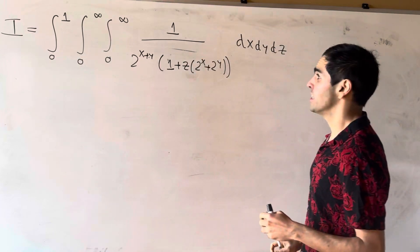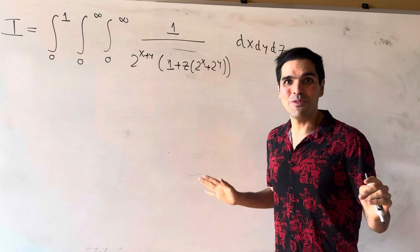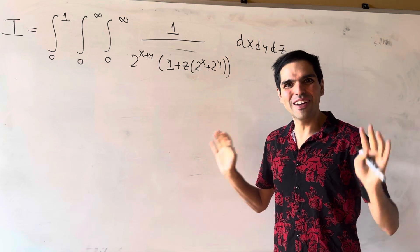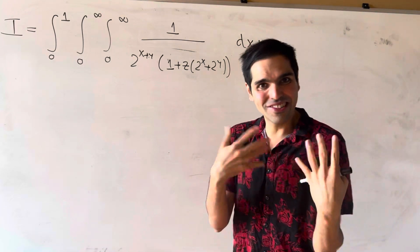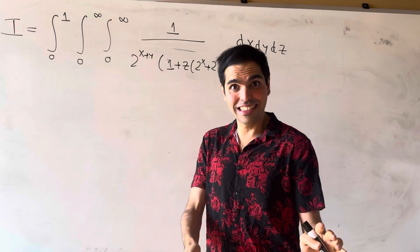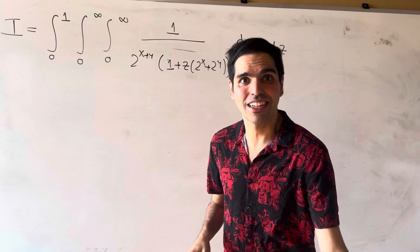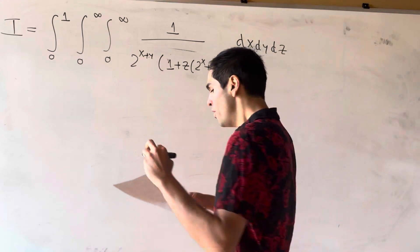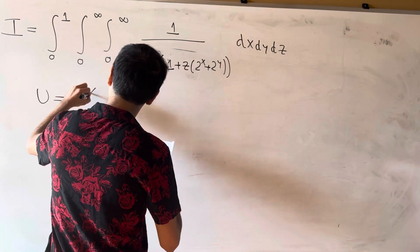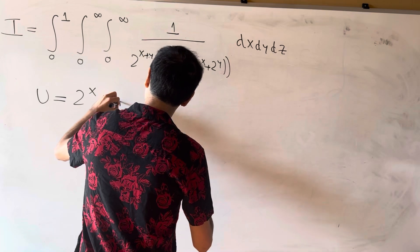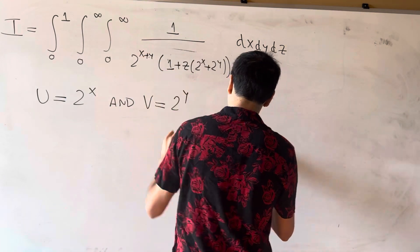I've put the z here. Now we want to make this even more complicated by using a little u-sub. This problem gets insane, insane, insane — until you see that in the end it just magically simplifies. So we use u = 2^x and v = 2^y.